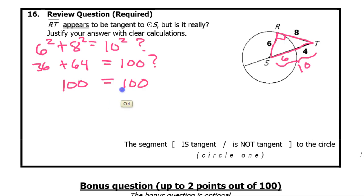So we have 100 is equal to 100. Since the Pythagorean theorem works, that means RS and RT are perpendicular. That makes RT tangent. So I'm going to go ahead and write down is tangent.